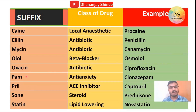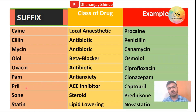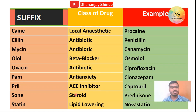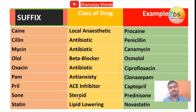Next is '-pam' — if the suffix of a drug is '-pam', then the class of drug will be anti-anxiety, and the example is clonazepam. Next is '-pril' — if the name of the drug ends with '-pril', then the class of drug will be ACE inhibitor, and the example is captopril.